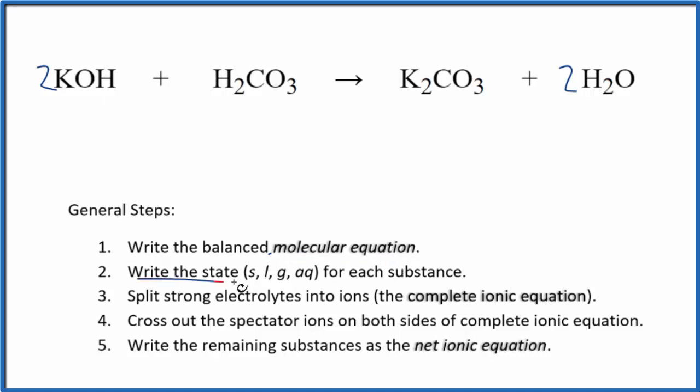Now we need to write the states for each substance. So potassium hydroxide, that's a strong base. So aqueous, that'll dissolve in water, and it'll dissociate into its ions. It's a strong electrolyte. This carbonic acid, it's a weak acid, but it really doesn't break up into its ions just a little bit. We have carbonates. We have this group one here, potassium group one element. So that's going to be aqueous. That'll dissolve, break apart, and then water, that's a liquid. So we have our states.